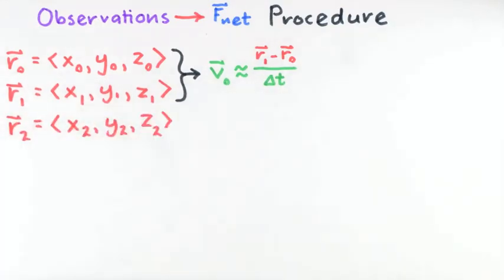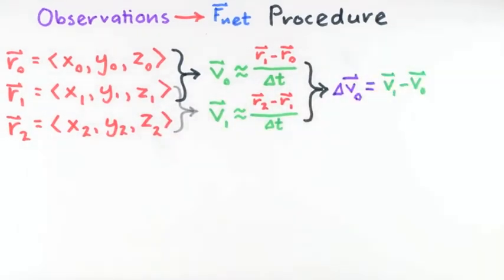So, from the first three position data points, we estimate two velocities. And from there, we'll get one estimate of the change in velocity, delta v.